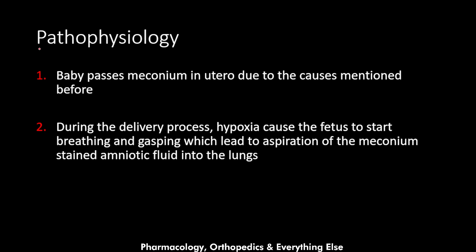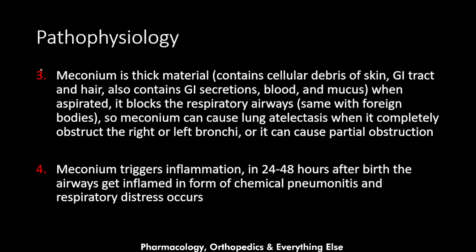Now let's talk about the pathophysiology. The baby passes meconium in utero, and during delivery, when the fetus becomes hypoxic, the hypoxia causes the fetus to start breathing and gasping, leading to aspiration of the meconium-stained amniotic fluid into the lungs. Meconium is a thick material containing cellular debris of the skin, gastrointestinal tract, and hair, as well as gastrointestinal secretions, blood, and mucus. When aspirated, it blocks the respiratory airways, similar to foreign bodies.